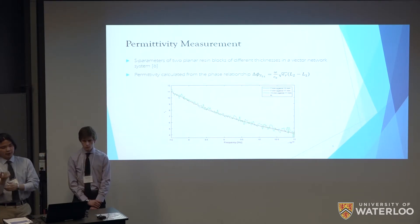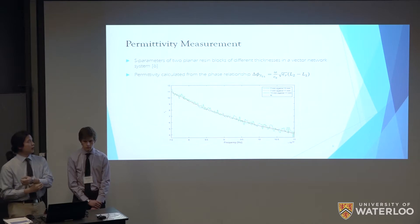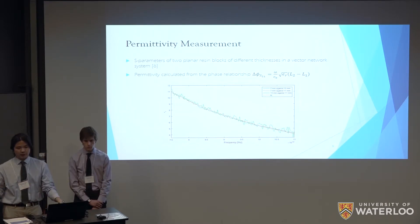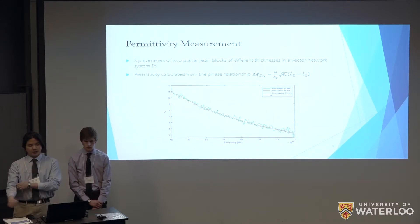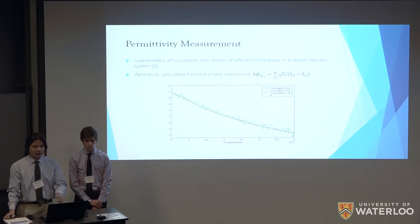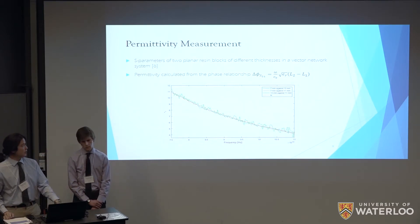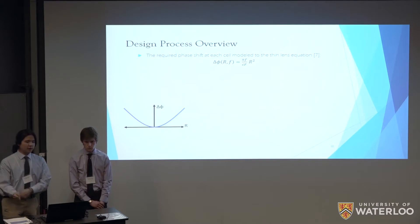Since the 3D printed material is actually a proprietary medium, we measured the permittivity of the materials so that we can do optimizations with regards to its optical properties. We measured the S-parameters between the two planar blocks of the materials with different thicknesses using a vector network system. The permittivity calculation was based on the phase change between the blocks of two different thicknesses, which gave us the permittivity values for this particular 3D printing resin. At our design frequencies of 75 to 110 gigahertz, it has a monotonic decay from 11 to 5 in terms of permittivity. Now we'll switch over to Isaac for the design process.